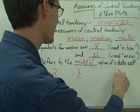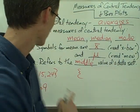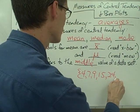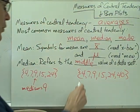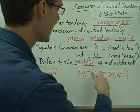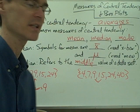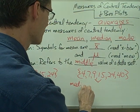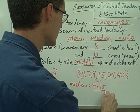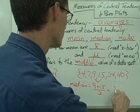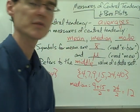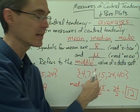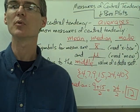What if the data set has an even number of values, so there isn't a single number in the middle? Let's say my data set is 4, 7, 9, 15, 24, and 40. Now I've got six numbers — there's not a single number in the middle. In this case, I find my two middle numbers, which are 9 and 15, and take their mean. So the median equals 9 plus 15 divided by 2: that's 24 divided by 2, which is 12. Notice the median here is not actually a number in the data set, which often happens with an even number of values.